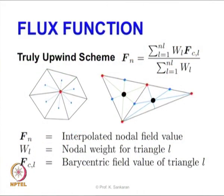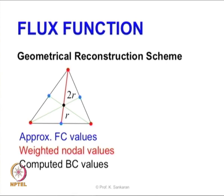To summarize: f_n will be the interpolated nodal fields, using the nodal weights of each triangle and the barycentric field values of those triangles. The next scheme is called the geometrical reconstruction scheme. As the name suggests, instead of looking at a particular triangle's neighbors, we look into a control volume itself and compute the flux value based on the geometry of each control volume.